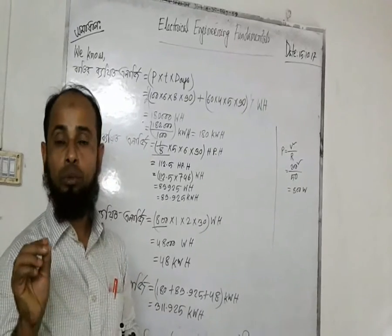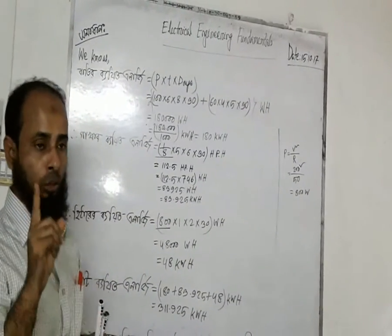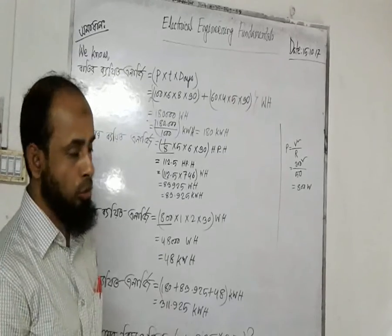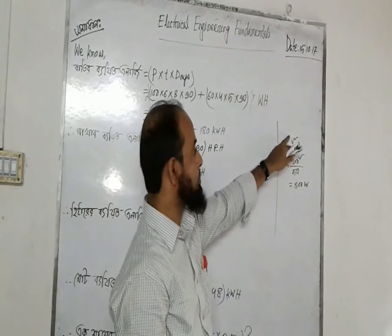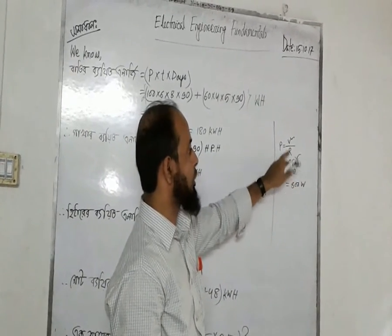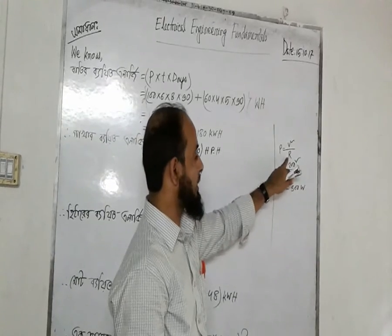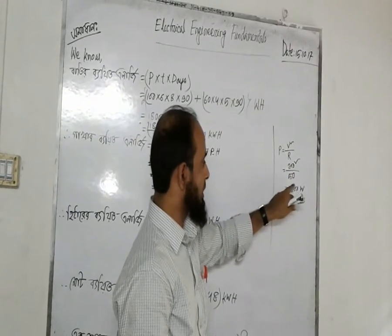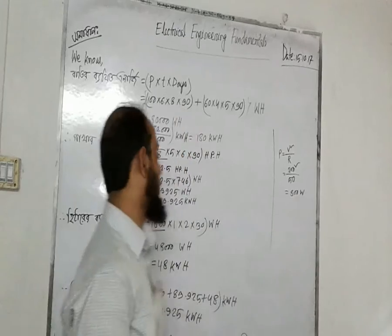Now we have to calculate the power. P is equal to V square by R, and R is 5V. So we have to change the power directly.